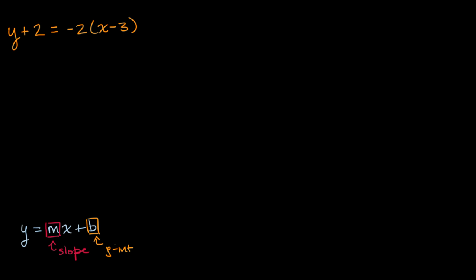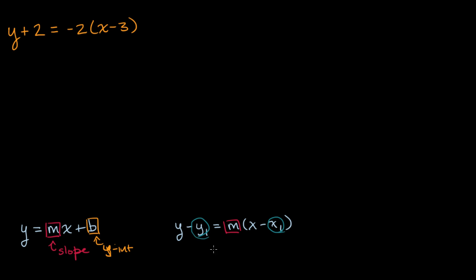Another option is to get into point-slope form. The general template for point-slope form is: if I have an equation of the form y minus y₁ is equal to m times x minus x₁, well then I immediately know that the line this equation describes is going to have a slope of m. The y-intercept doesn't jump out at you, but you know a point on this line — in particular, the point (x₁, y₁).